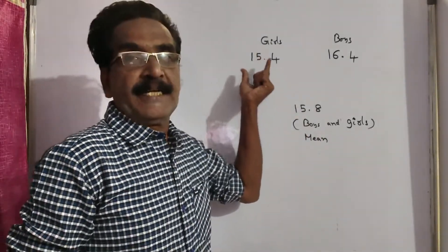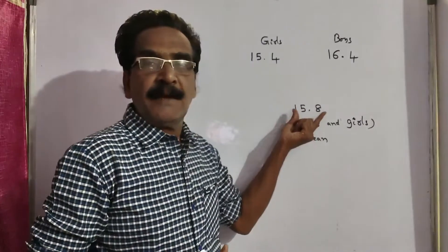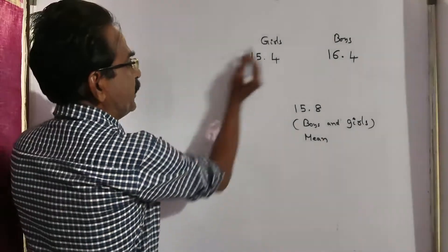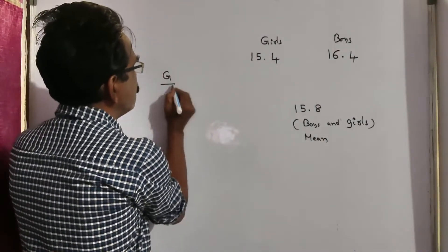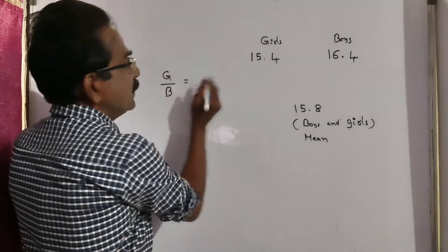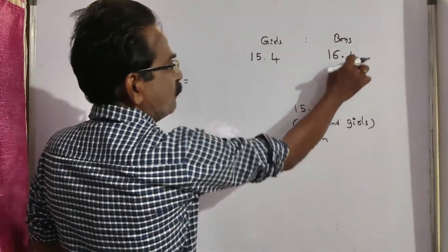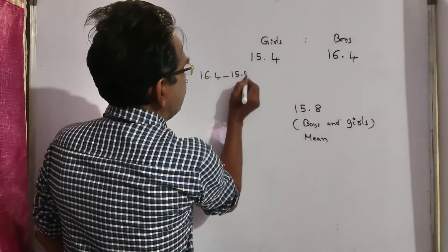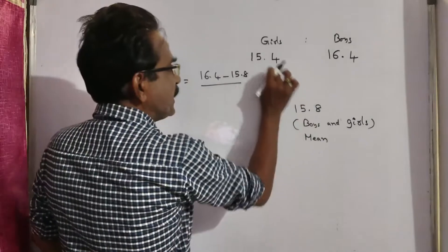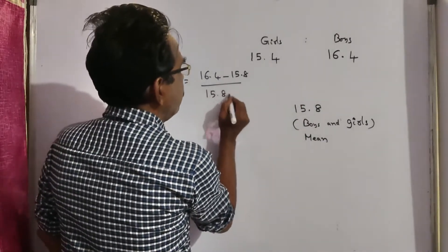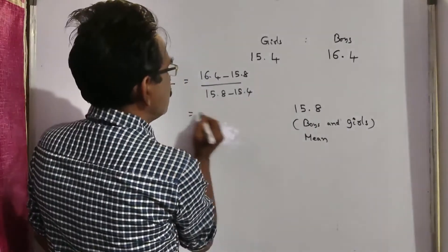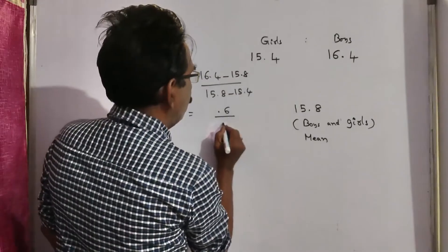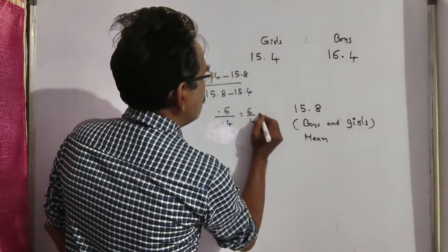So, this is the cheaper quality, and this is the dearer quality. This is called the mean. Now, by the rule of allegation, the quantities ratio — that is, the number of girls to number of boys — is equal to 16.4 minus 15.8, divided by 15.8 minus 15.4. This is equal to 0.6 by 0.4, which is equal to 6 by 4.